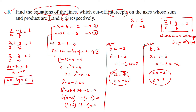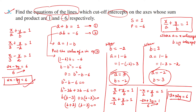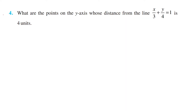The second pair gives x/(-2) + y/3 = 1, which simplifies to -3x + 2y = 6. So the two required equations of lines are 2x - 3y = 6 and -3x + 2y = 6.